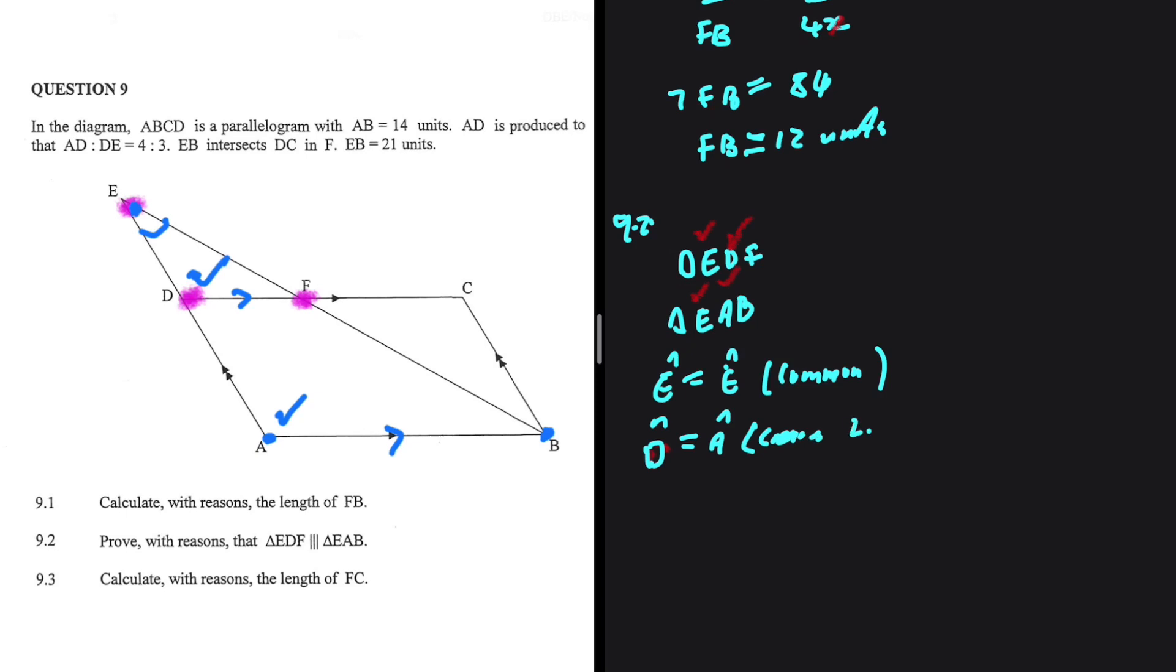So we have corresponding angles because DF is parallel AB. If we've proved that two angles are equals to each other in two triangles, then the third angles are also going to be equals to each other because of the sum of angles on a triangle.